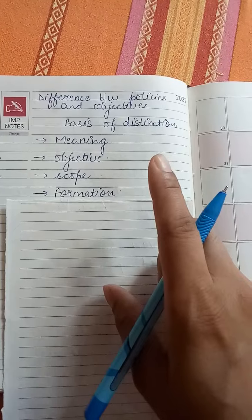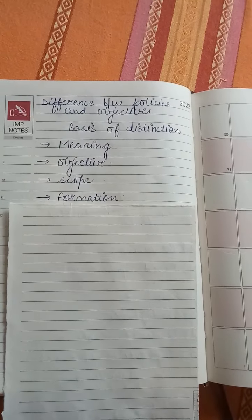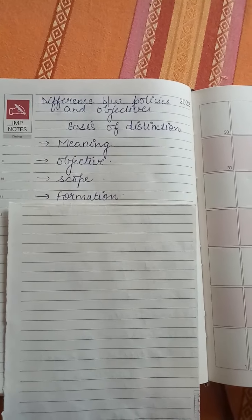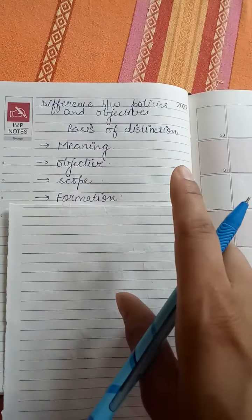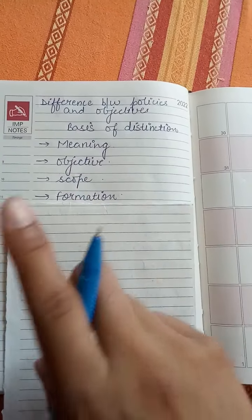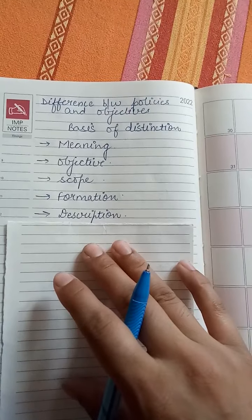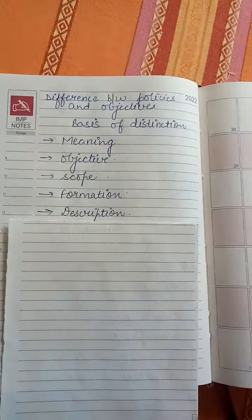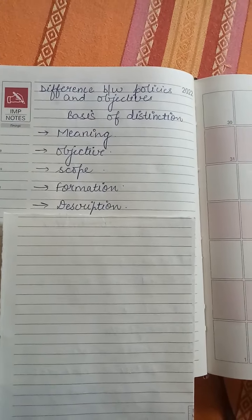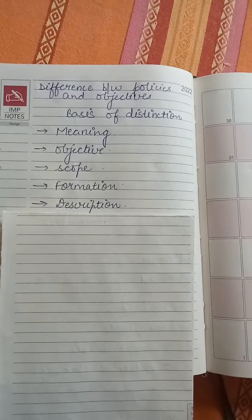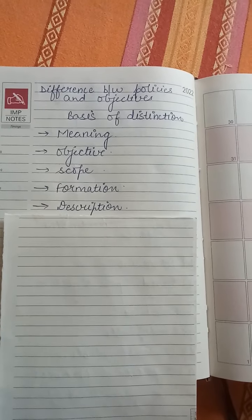Next, we have scope. If I talk about policy, it is narrow in scope. But if I talk about objective, it is broader in scope. The reason is that objectives form the basis on which other plans are prepared. All management functions are based on objectives.